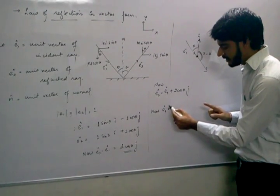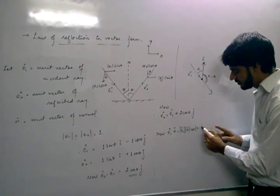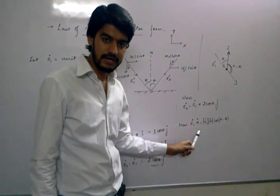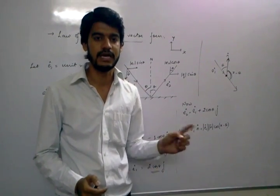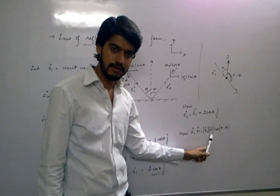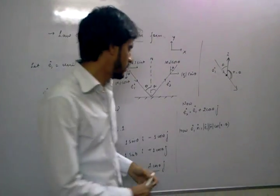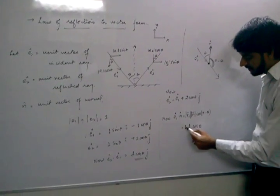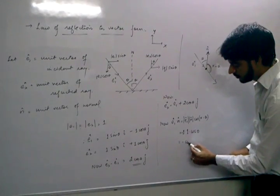The dot product of unit vector E1 and unit vector N equals the magnitude of E1 times the magnitude of N times cos of the angle between the two vectors. You all know the formula: vector A · vector B = |A||B| cos θ. So E1 · N = 1 × 1 × cos(pi minus theta) = minus cos theta. Since cos(pi − theta) = −cos theta, this equals minus cos theta.